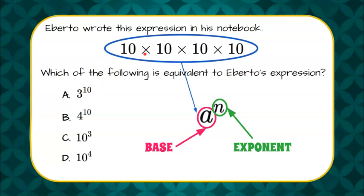We're going to note that our base has to be 10 because we are repeatedly multiplying 10 by itself. That means A cannot be our answer because we're repeatedly multiplying 3. B can't be our answer because this is repeatedly multiplying 4. So it has to be C or D because they both have bases that are 10.